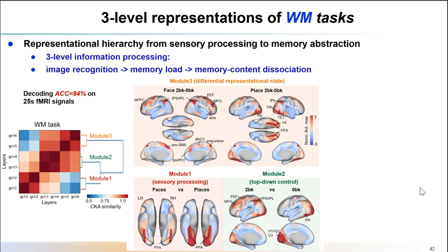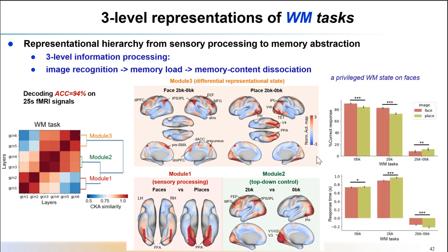For high-order cognition such as working memory tasks, we uncovered a three-level representation transforming from sensory processing to memory abstraction. At the first level, it mainly involves sensory processing, activating the visual areas in the ventral stream such as FFA for face recognition and PPA for place images. At the second level, it encodes different levels of memory load — for instance, two-back versus zero-back tasks — and also activates the frontal and parietal regions. At the third level, it demonstrates a preferential representation state for face memory. Surprisingly, in the behavioral data, we also find a similar pattern — participants perform better on face memory tasks, suggesting a super-mode for face memory.